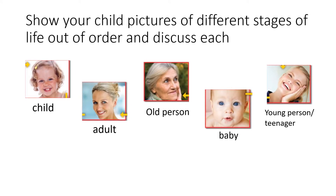Show your child pictures of different stages of life and discuss each of them. The first one is a child picture. Since you are a child right now, you will look pretty much like this picture. And then, adult — who is the adult in your family? Your mom and your dad. If you have grandparents in your family, they are the older person.